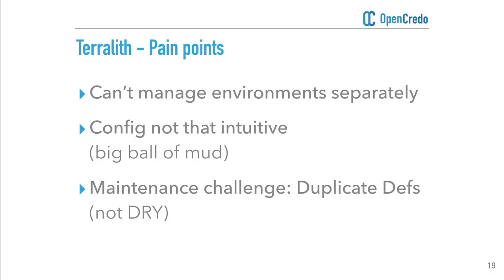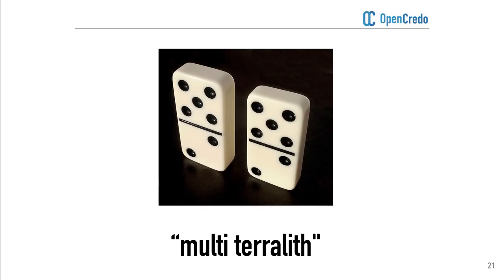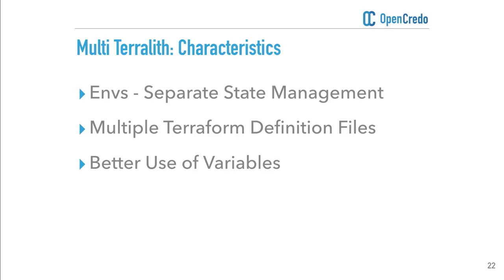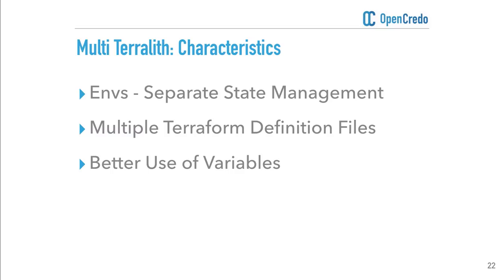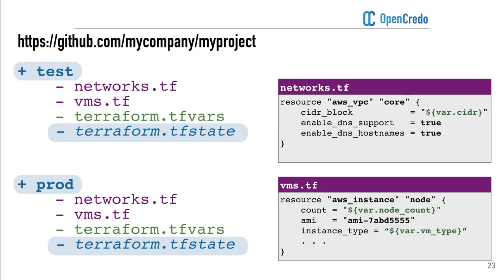So she gets some help in and they evolve the infrastructure for the first time, moving to what I would call the multi-Terralith. The biggest change is to have separate environment state management — a massive bonus in terms of reducing the operational risk of not destroying production infrastructure. To deal with maintenance and readability, they also move to multiple Terraform definition files and start using variables better. In their single repository they create two different directories — test and production — each with a separate TF state file.